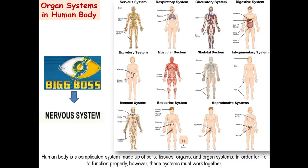Coming to the organ systems of the human body — there are 12 organ systems: immune, endocrine, muscular, and others. But the big boss is the nervous system. The human body is a complicated system made up of 37.2 trillion cells. Cells make tissue, tissues make organs, and organs make organ systems, of which there are 12 in the human body. In order for life to function properly, these systems work together.